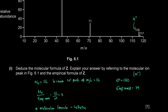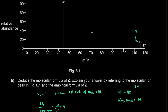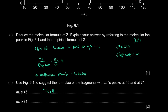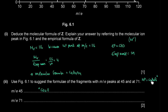Molecular ion at 116, remove 45 (CO₂H), get 71. Removing one carbon, two oxygens, and one hydrogen from C₄H₄O₄ gives C₃H₃O₂⁺. So the fragment at 71 is C₃H₃O₂⁺.